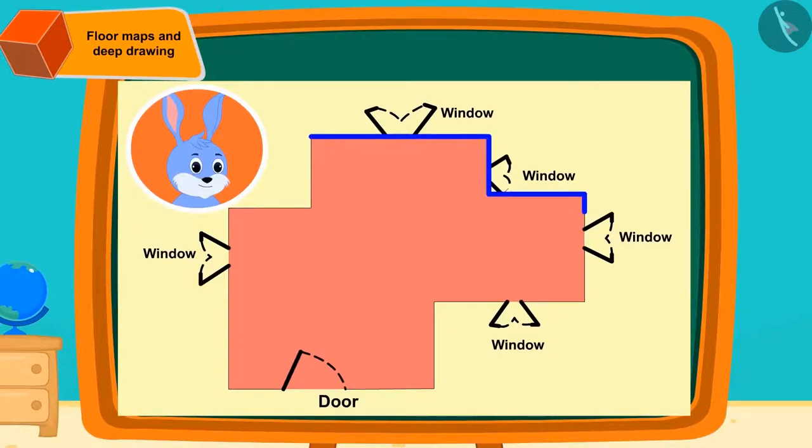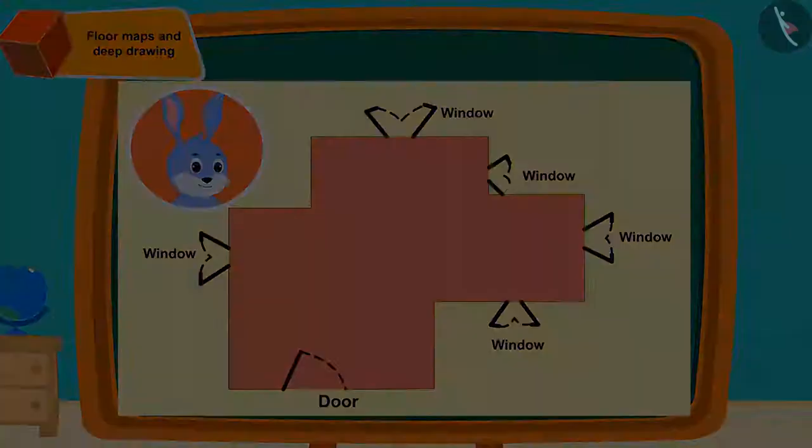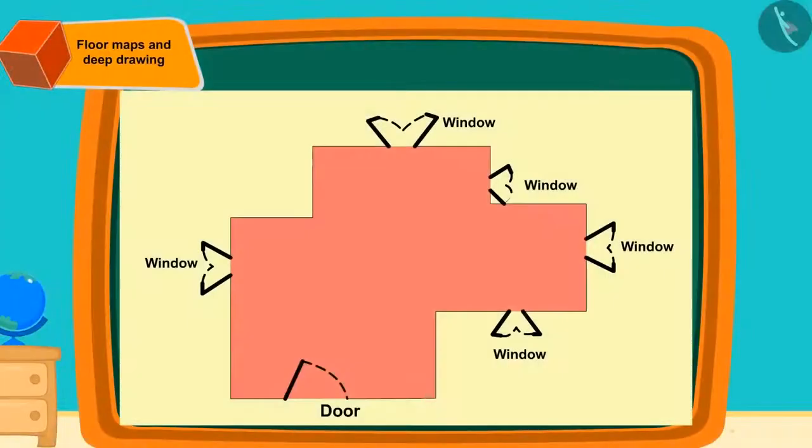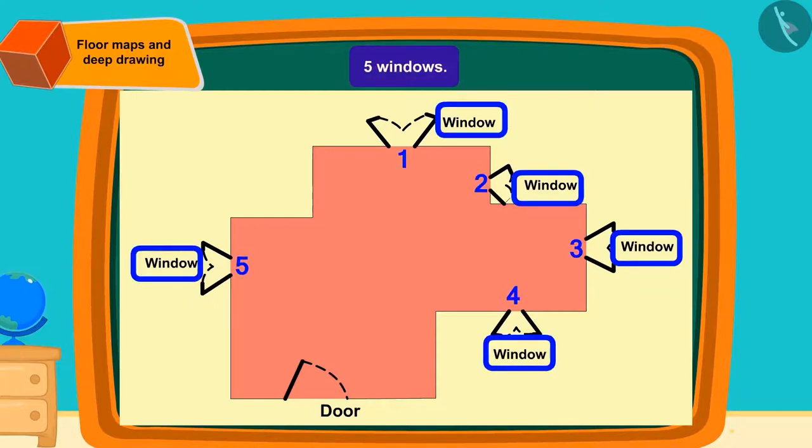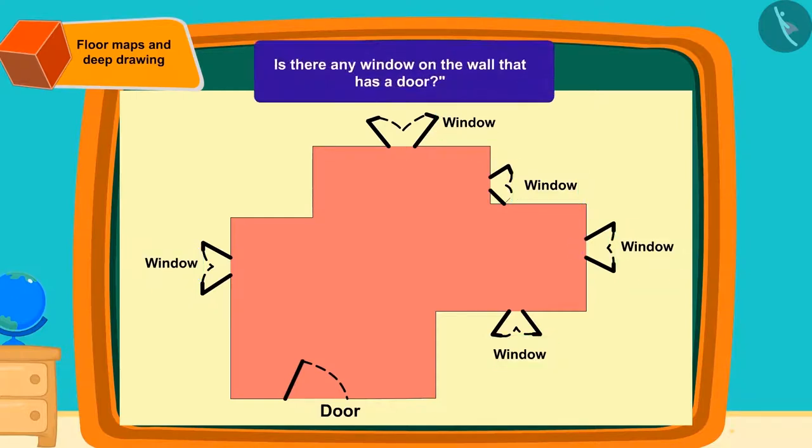From the map of the floor of a room or the house, we can find out where the windows and doors are in it. Can you tell by looking at the map of the floor how many windows are there? Yes, the floor map has five windows.